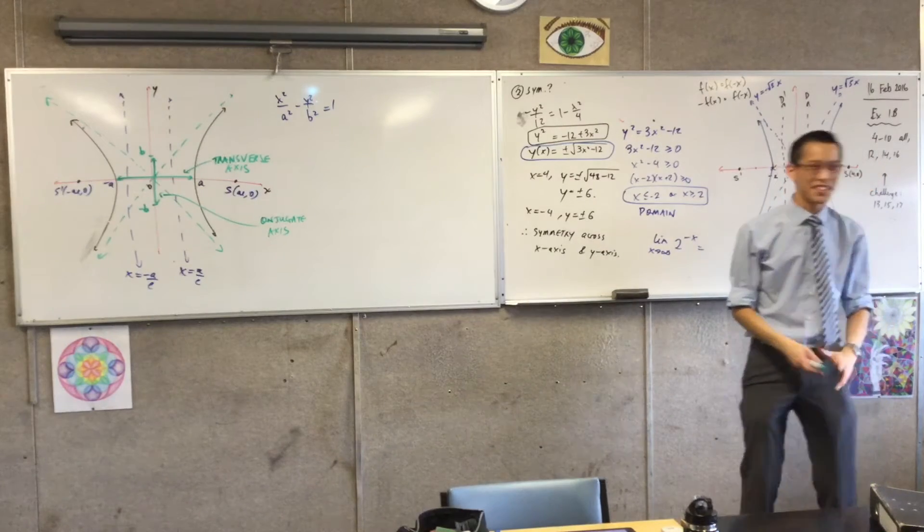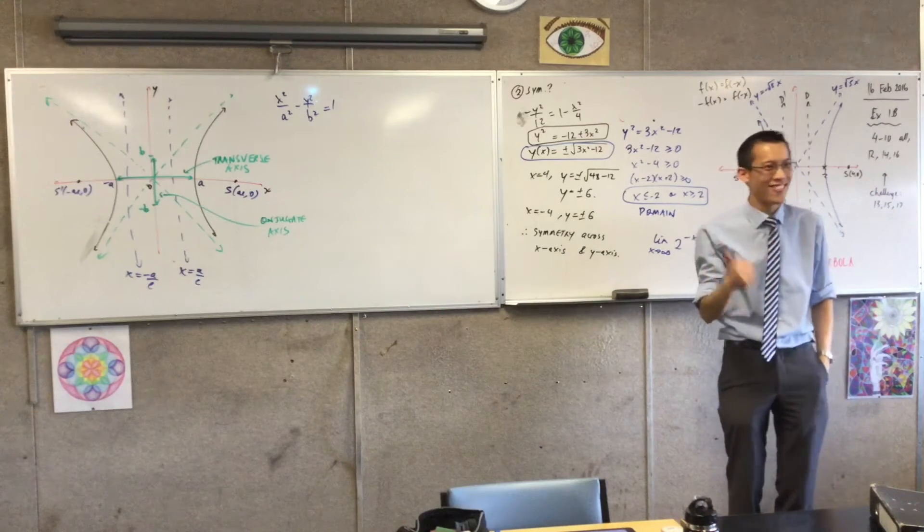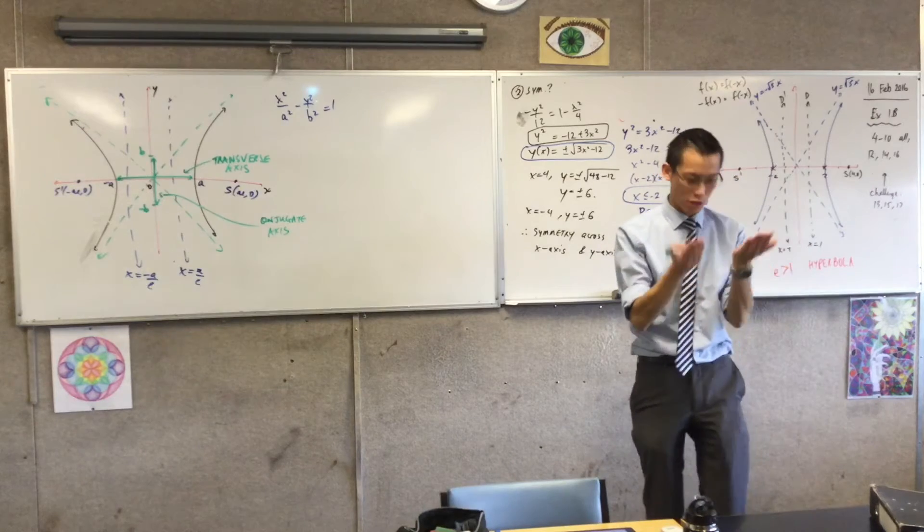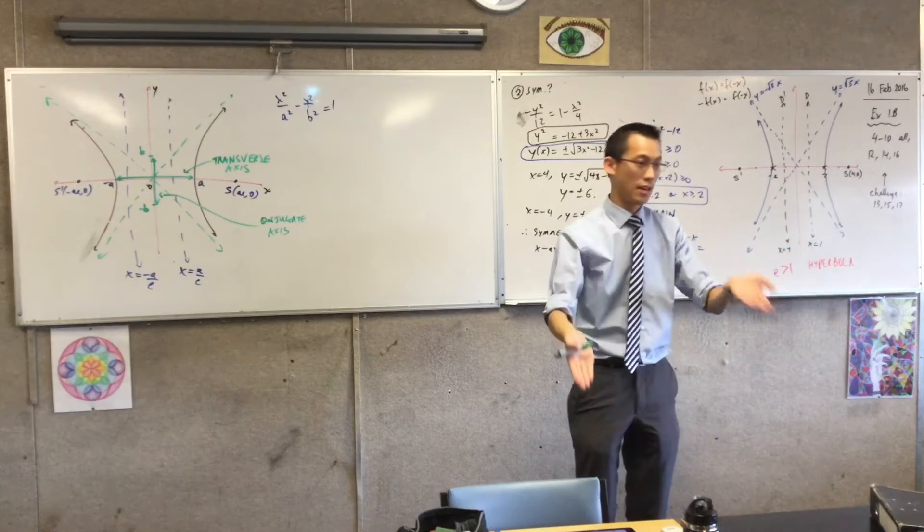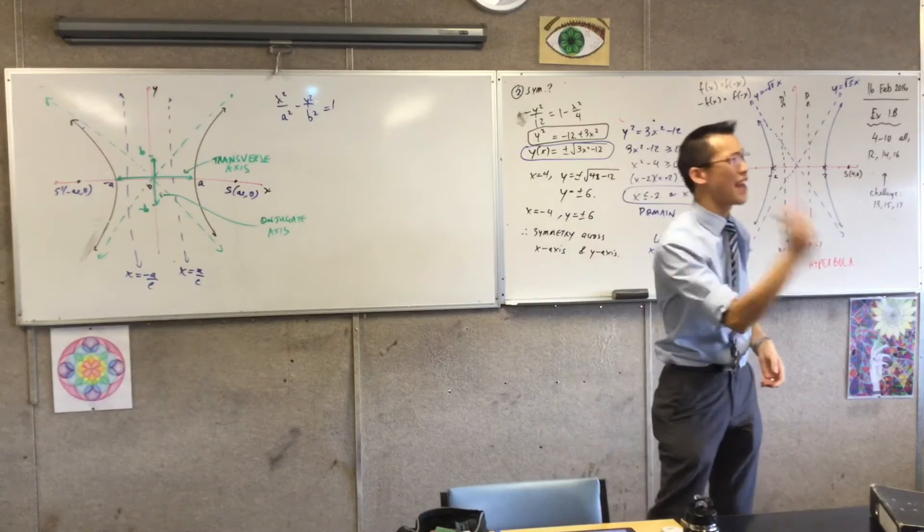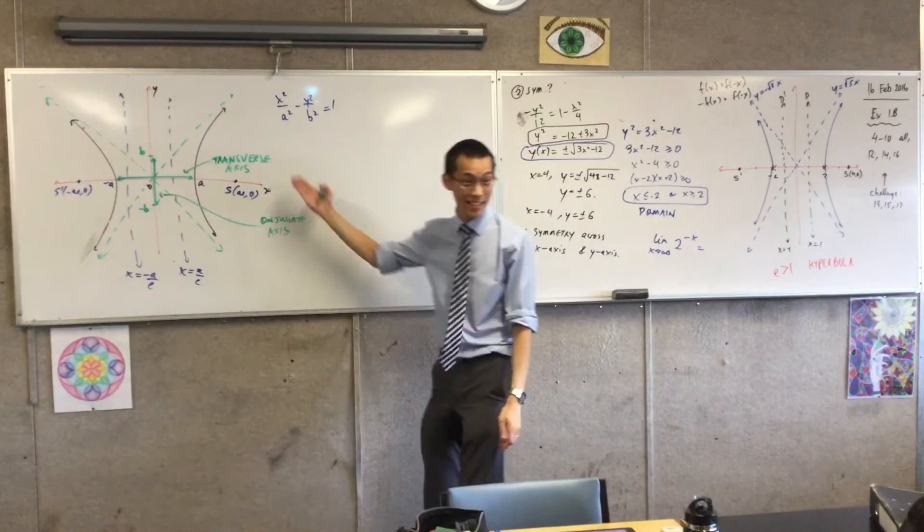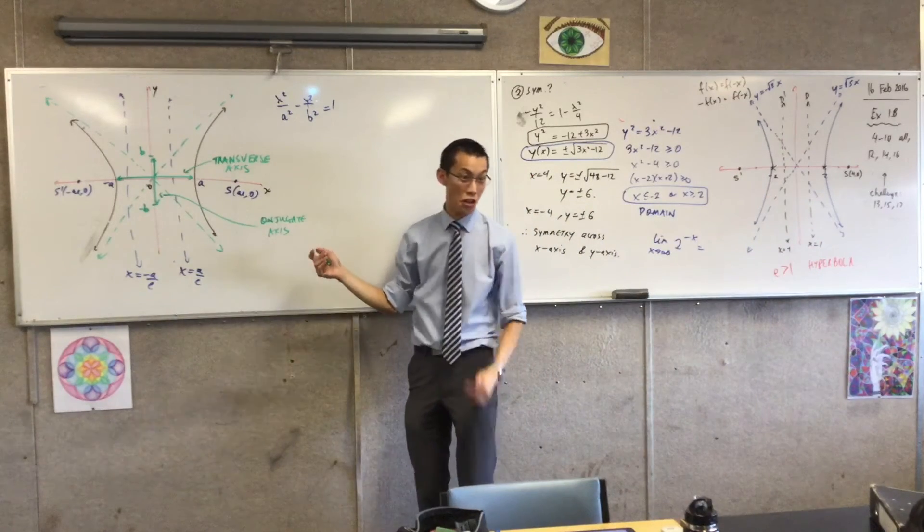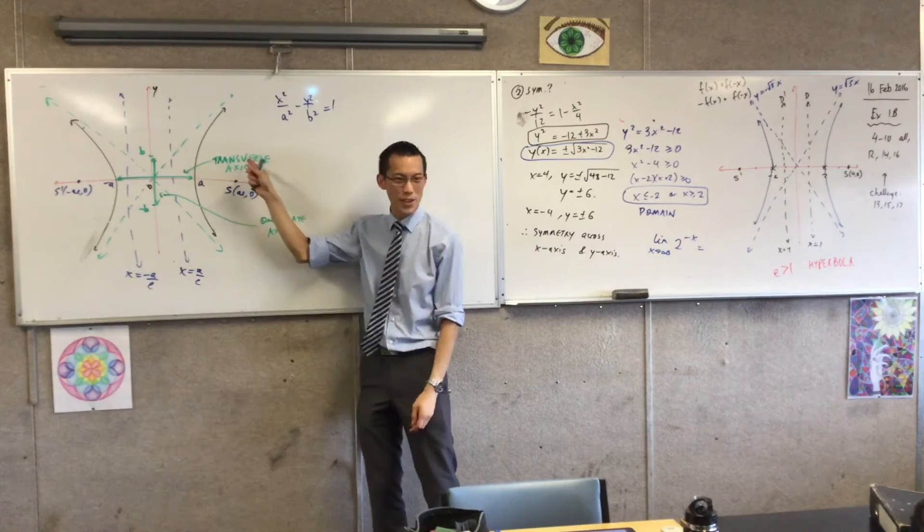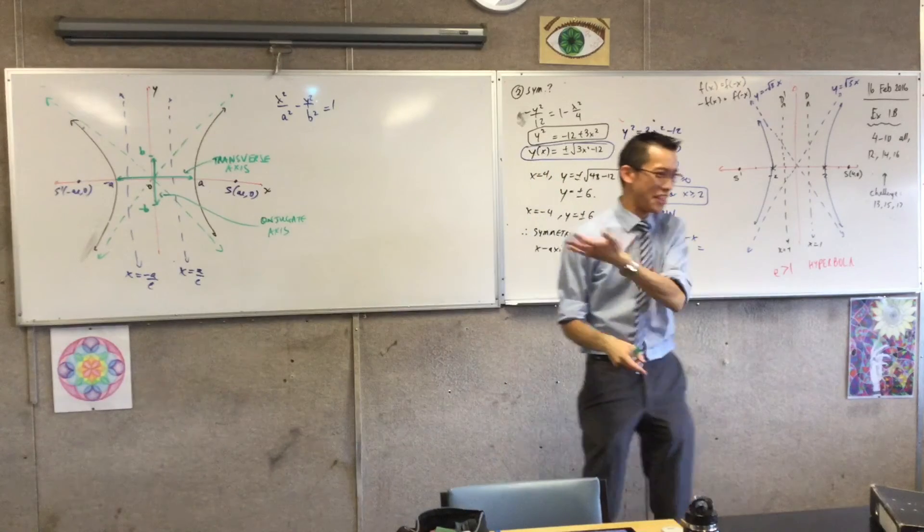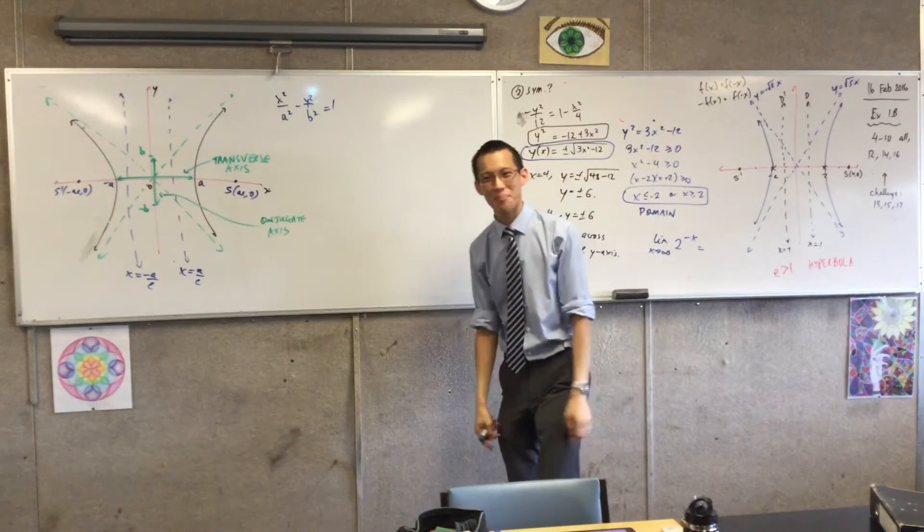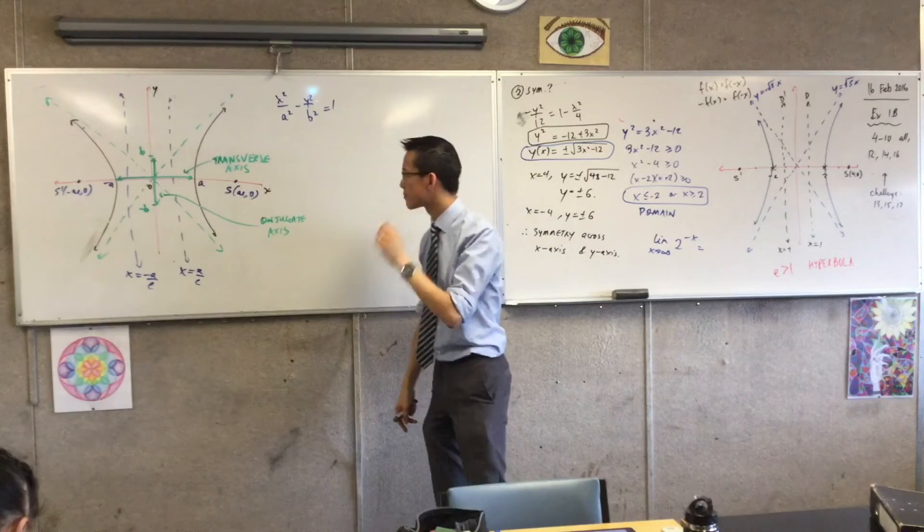Now, what does conjugate mean? Conjugate kind of means, you know, the other one, right? It's like in a pair, you've got two things. There's one thing, and its conjugate. Wherever you've got pairs of anything, like axes, a conjugate just means the other one. So transverse has a meaning. You cross between the branches. Conjugate just means it's not that one.